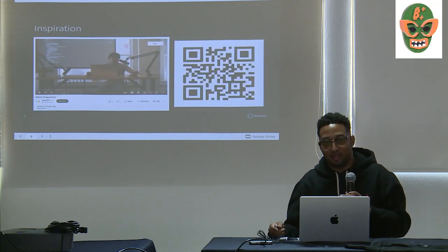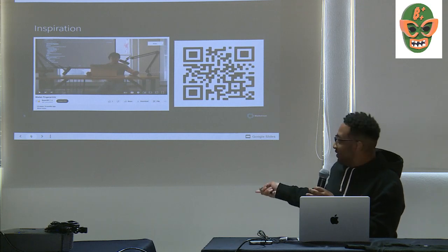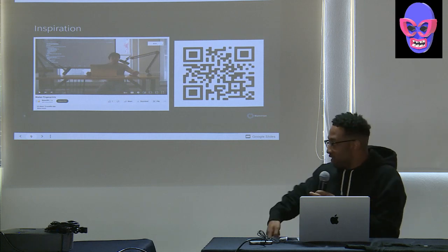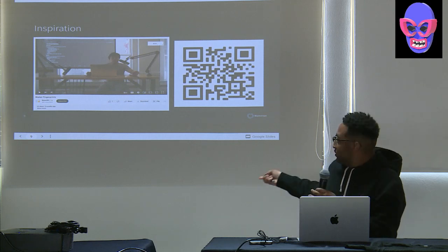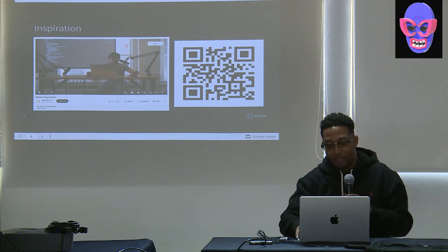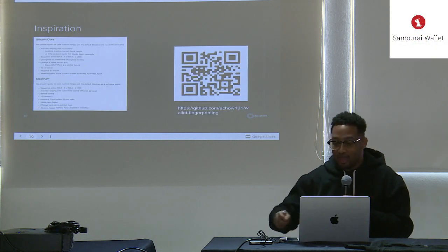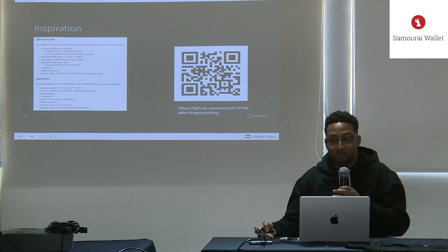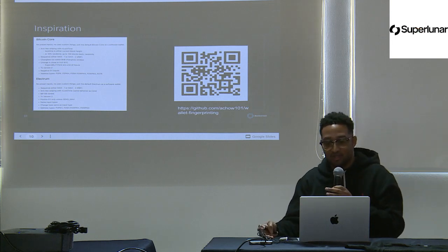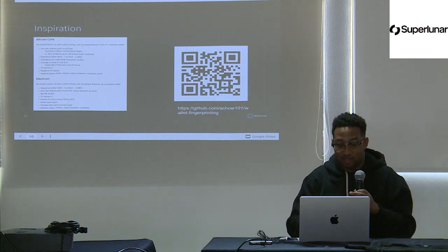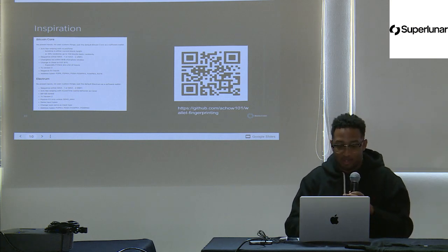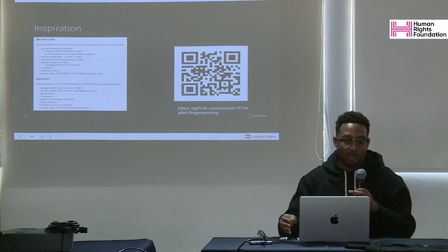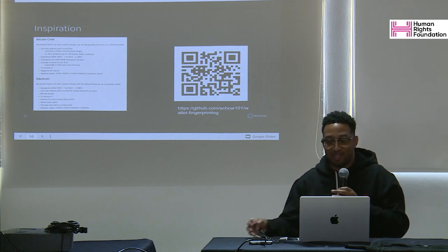I had some inspiration for this from Andrew Chow, who had a talk at a Bitcoin hackathon — the previous Bitcoin++. He did analysis on different metrics for identifying wallet software implementations, such as whether the wallet uses anti-fee sniping and lock time. He analyzed Bitcoin Core and Electrum. I liked that idea and wanted to expand on it.